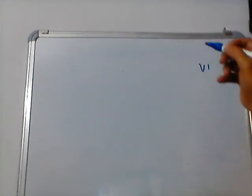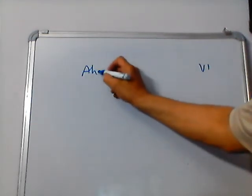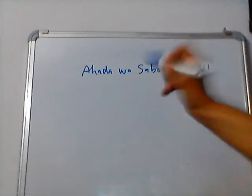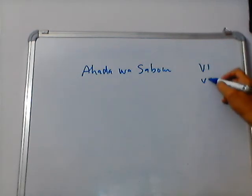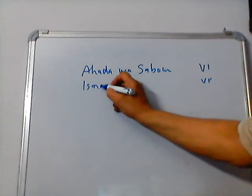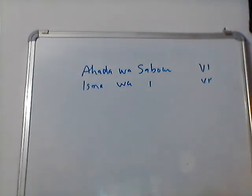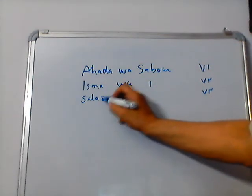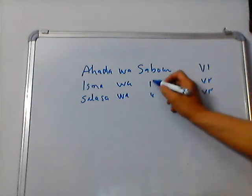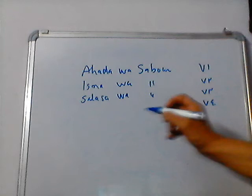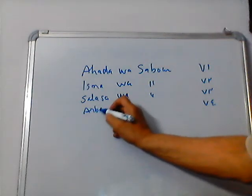71 is written as Ahada wa Saboon. 72 is written as Ithna wa Saboon. 73 is written as Thalatha wa Saboon. 74 is written as Arba wa Saboon.